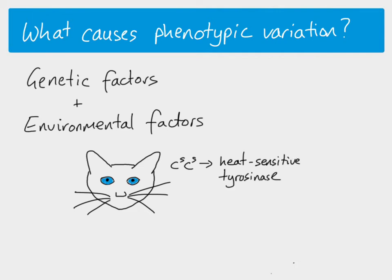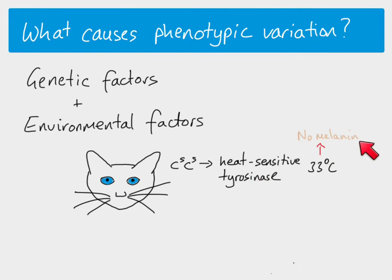Siamese cats have two copies of a recessive allele, making them homozygous recessive. This means they produce a heat-sensitive form of tyrosinase enzyme, which only works at some temperatures. Above 33°C, the tyrosinase enzyme doesn't work, so no melanin is produced and you get a lighter coat color. Below 33°C, the enzyme works, produces melanin, and you get darker areas of coat.